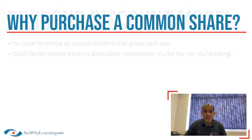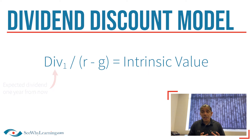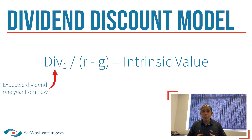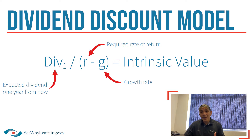If you look at the screen now, you'll see the dividend discount model, which is Div1 — standing for the dividend one year from now — divided by r, the required rate of return, minus g, the growth rate.